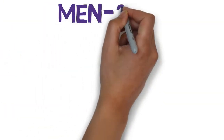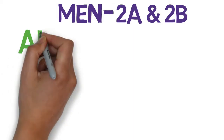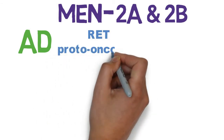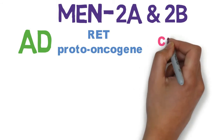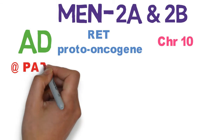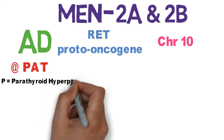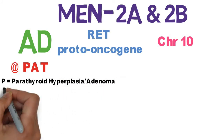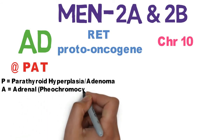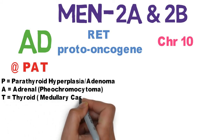MEN 2a and 2b are both autosomal dominant disorders caused by a genetic defect in the RET proto-oncogene, located on chromosome 10. The mnemonic for MEN 2a is PAT PAT: P is for parathyroid hyperplasia or adenoma, A is for adrenal involvement in the form of pheochromocytoma, and T is for thyroid involvement in the form of medullary carcinoma of the thyroid.